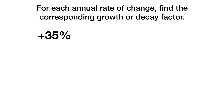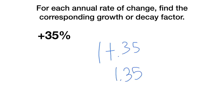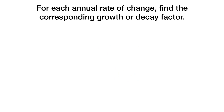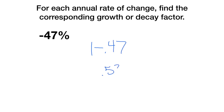For each annual rate of change, find the corresponding growth or decay factor. Since the first is an increase, we do 1 plus 0.35, giving a factor of 1.35. Since the second is a decrease, we do 1 minus 0.7, giving a factor of 0.53.